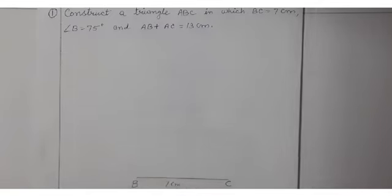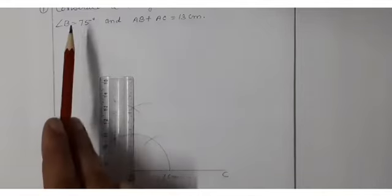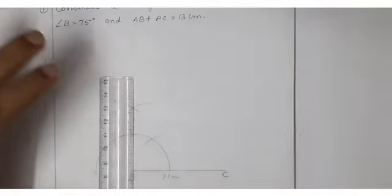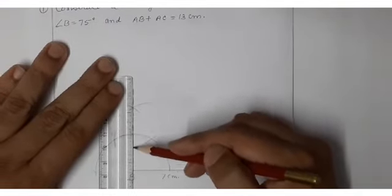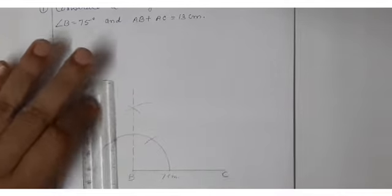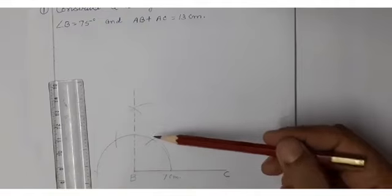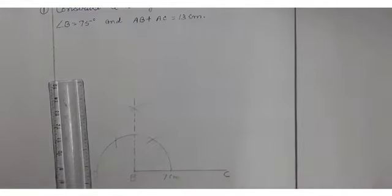Then we have to draw a 75 degree angle with help of compass. For making an angle of 75 degrees, we first draw a helping angle of 90 degrees with help of compass. After joining, this gives your 90 degree. For making 75 degrees, I have to bisect between 90 degree and 60 degree with help of compass.